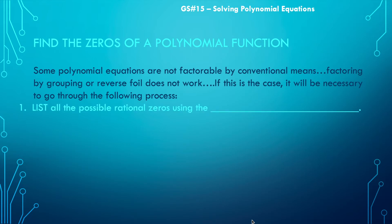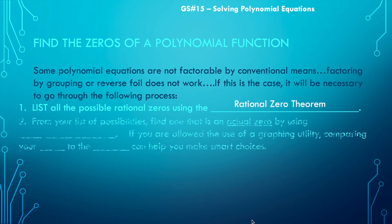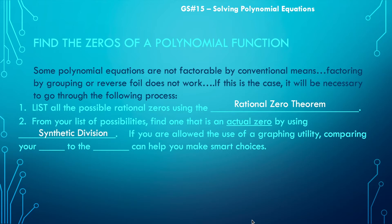The first thing you're going to want to do is list all the possible rational zeros using the rational zero theorem that we talked about in the last skill. The next thing you're going to want to do is look at that list of possibilities and find one that's an actual zero by using synthetic division and the factor theorem. If it's an actual zero, the remainder will be zero.